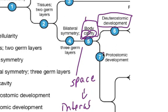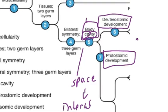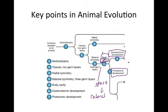The next step is embryonic development: whether the fate of the blastopore is going to be the anus — making the organism deuterostomic — or whether the fate of the blastopore is going to be the mouth. This is the next key point of animal evolution: the fate of the blastopore.